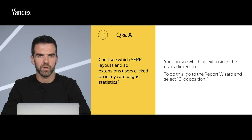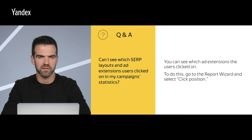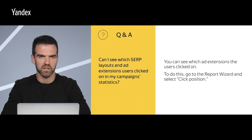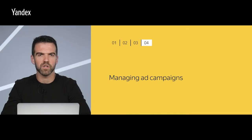An important question: can I see which SERP layouts and ad extensions users clicked on in my campaign statistics? As for SERP layouts, no — you cannot see which SERP layouts users clicked on. You can see, however, which ad extensions were clicked on. To do this, you need to go to Report Wizard and click Position. Now let's move on to part four: managing ad campaigns.